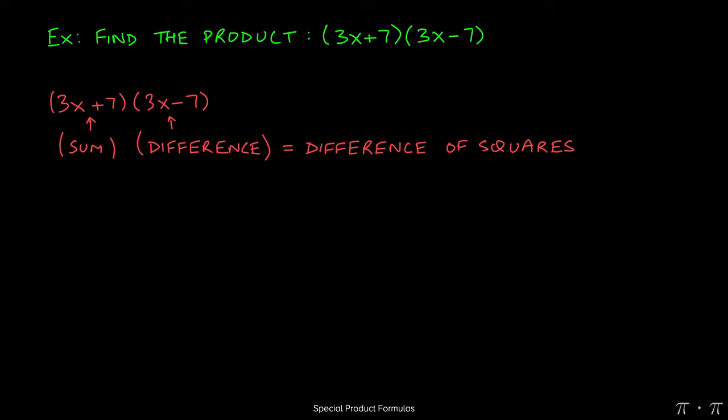All we have to do in this problem is square the first term, so we get 3x quantity squared, minus, because it's a difference of squares, square the second term, so 7 squared. 3x times 3x will give us 9x squared, and finally 7 times 7 will give us 49, which ends our problem.